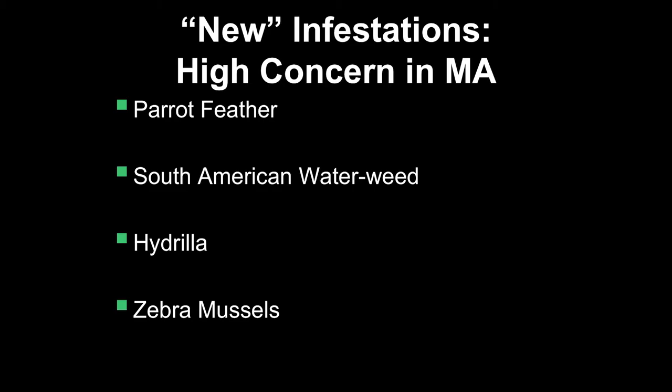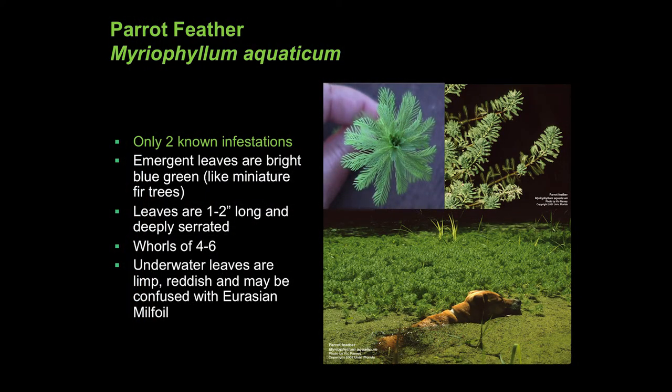These are some species considered new infestations — sort of rare in the state, but basically the number one on our most-wanted list. There's parrot feather again — a pretty plant, which is why it was an aquarium plant. The only places it's been found in Massachusetts have been backyard-type ponds where someone probably planted things on purpose, dumped an aquarium, or planted lily pads with fragments mixed in. The only two occurrences found have been managed and treated, and at this point we don't know of any other locations in Massachusetts with parrot feather.